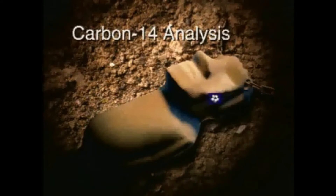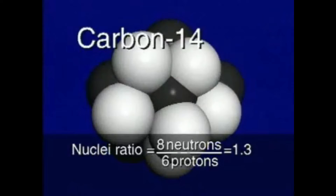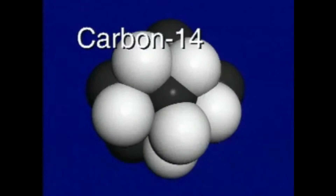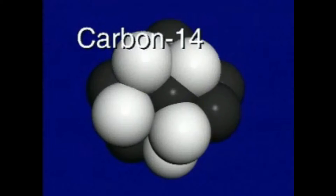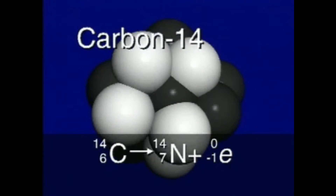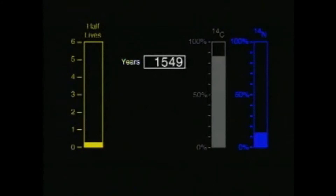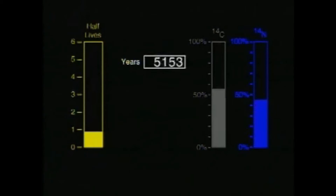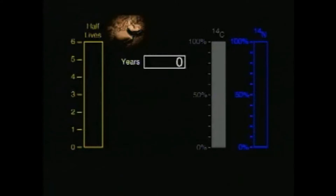The nucleus of a carbon-14 atom is unstable. At some point, this unstable nucleus will emit a high-energy electron called a beta particle, which has a negative one charge. The beta particle causes a neutron to change to a proton, and the carbon-14 atom then decays into a nitrogen-14 atom. The average time for half of a group of carbon-14 atoms to decay is 5,730 years, called a half-life.